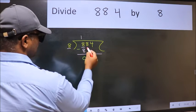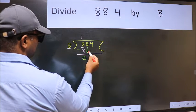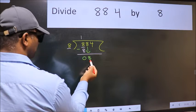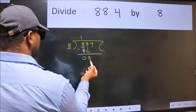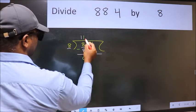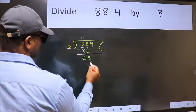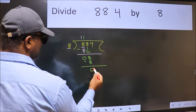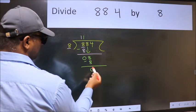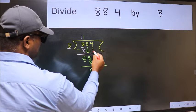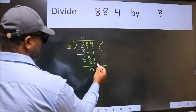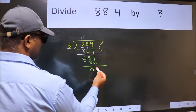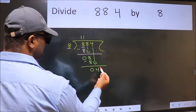After this, bring down the beside number. So 8 down. When do we get 8 in the 8 table? 8 once is 8. Now we subtract. We get 0. After this, bring down the beside number. So 4 down.